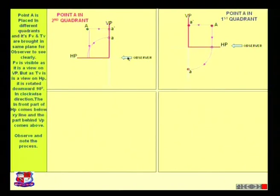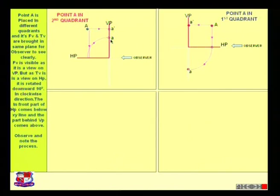Just rotate a point which is on the horizontal plane at clockwise 90 degrees to see it clearly. If I want to see this point and I am looking from this side, I cannot see the point clearly. But if I bend down this paper 90 degrees, then I can see the point clearly. So this is the thing we are doing here — just rotating at clockwise 90 degrees. This is the basic fundamental for all the projections. Any point on HP must be rotated clockwise 90 degrees.